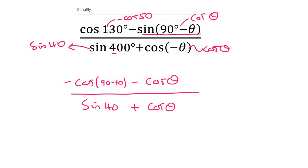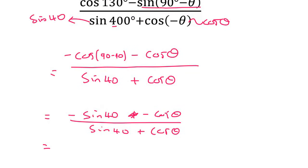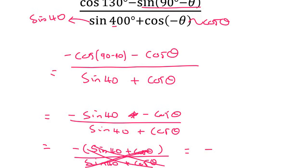So then in the next step, you would have changed this. That's going to become negative sin 40 minus cos theta over sin 40 plus cos theta. And so what you should identify now is that if we take out a negative as a common factor at the top, you're going to end up with sin 40 plus cos theta. And then at the bottom, we'll just leave it as it is. And then what happens is that the top and bottom can now cancel because they are exactly the same. And so we'll just be left with negative 1.